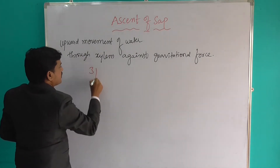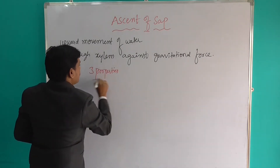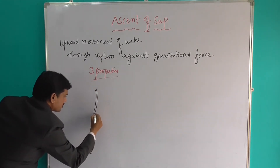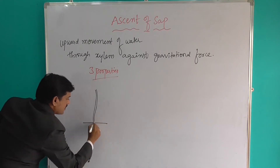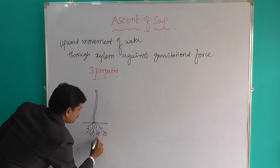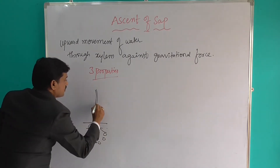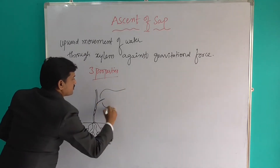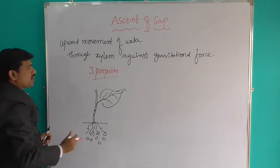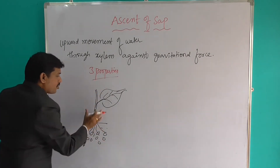It has three properties. For understanding purposes, I will give you one diagram. This is a small diagram — this is root. This is soil. This is just like shoot, and these are leaves present. So these three properties are explained using this diagram.